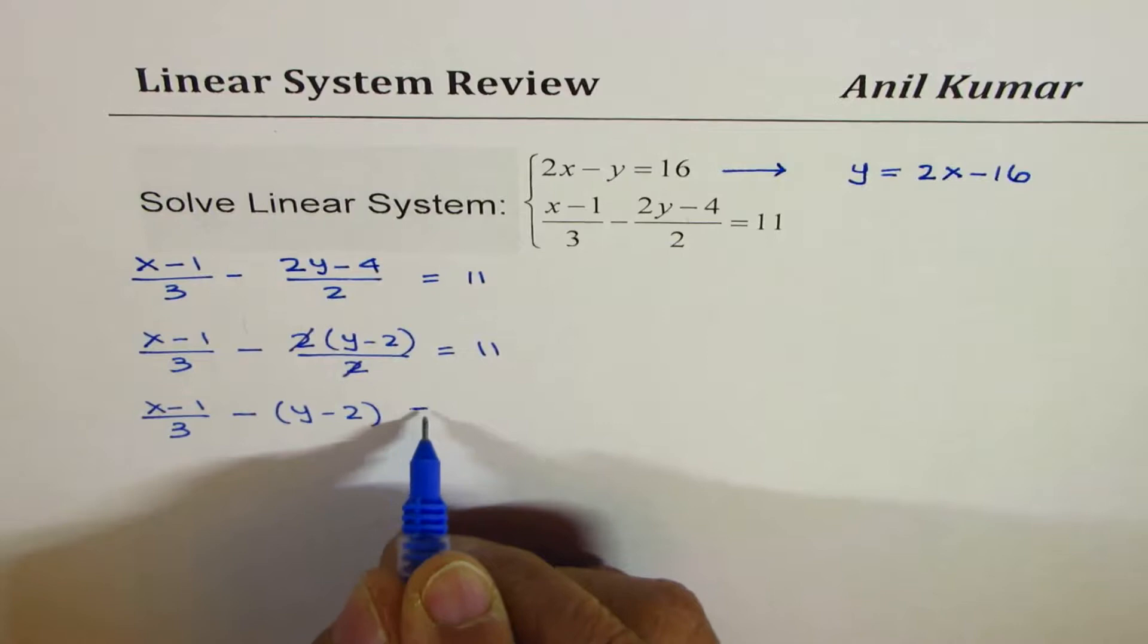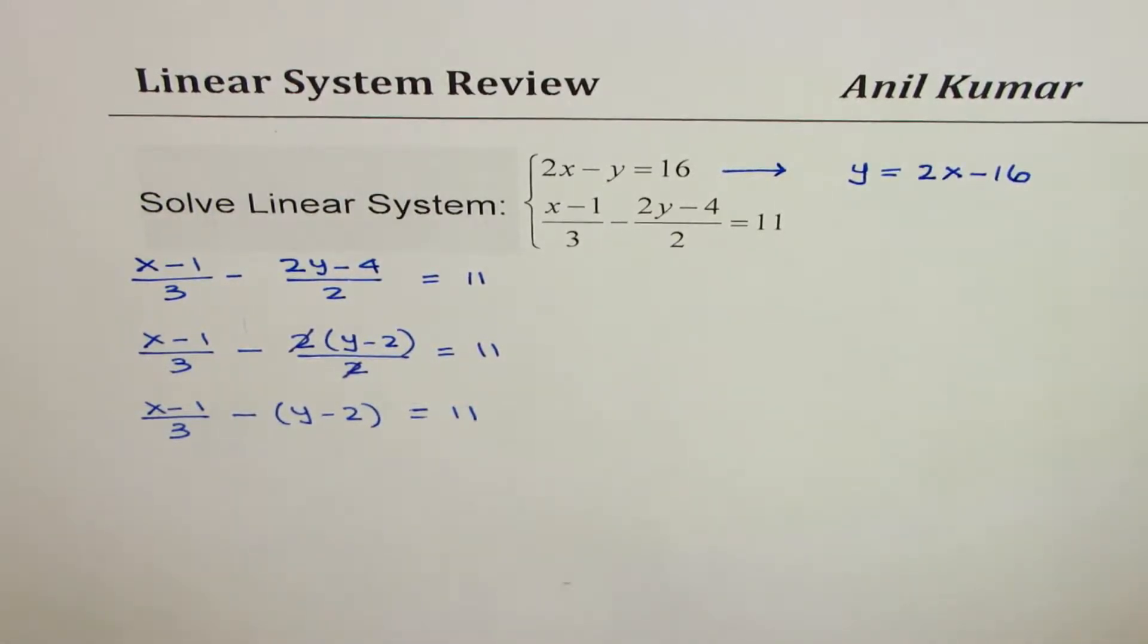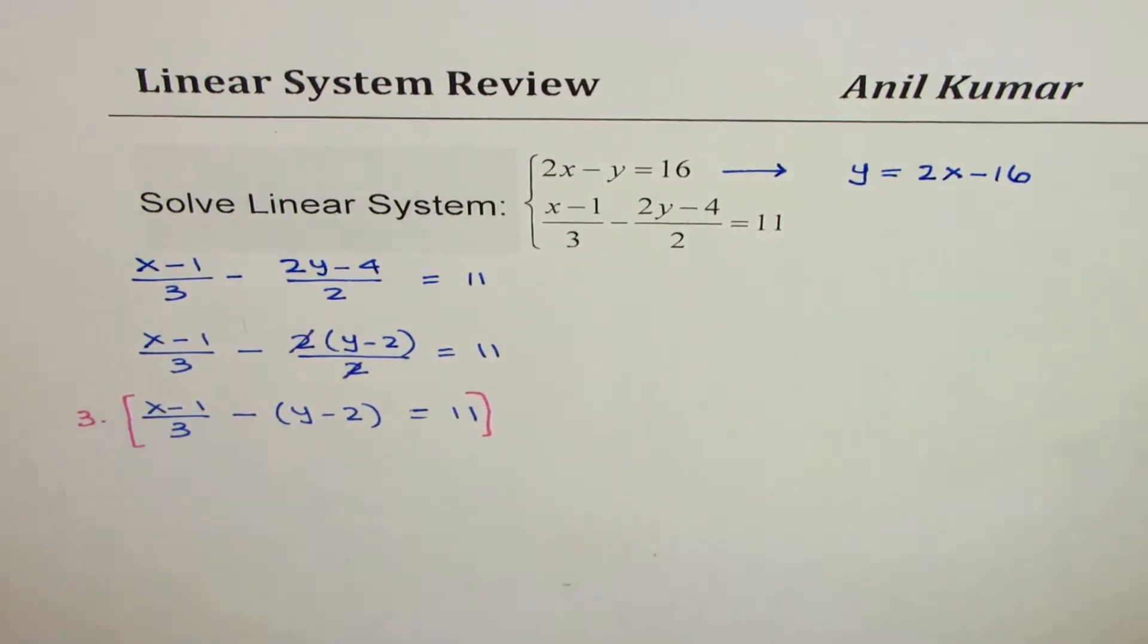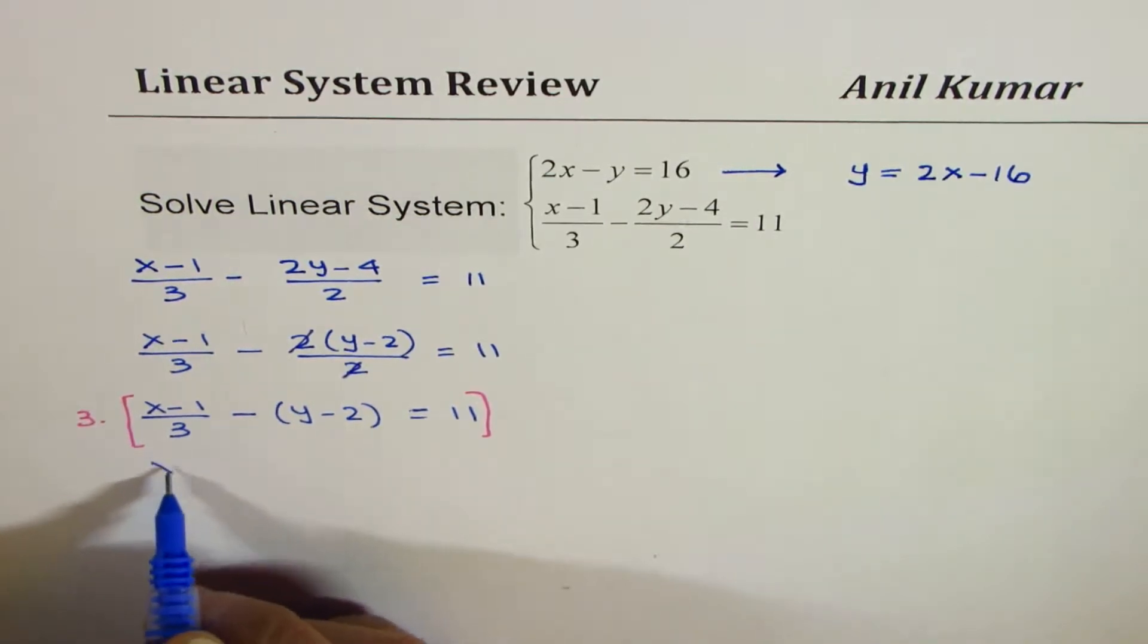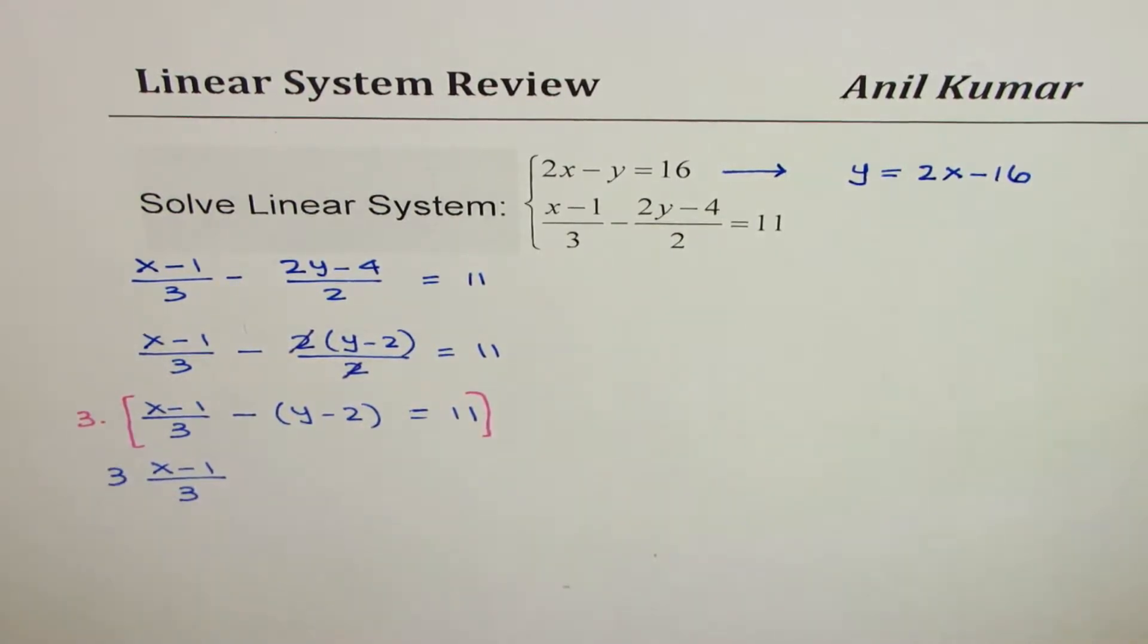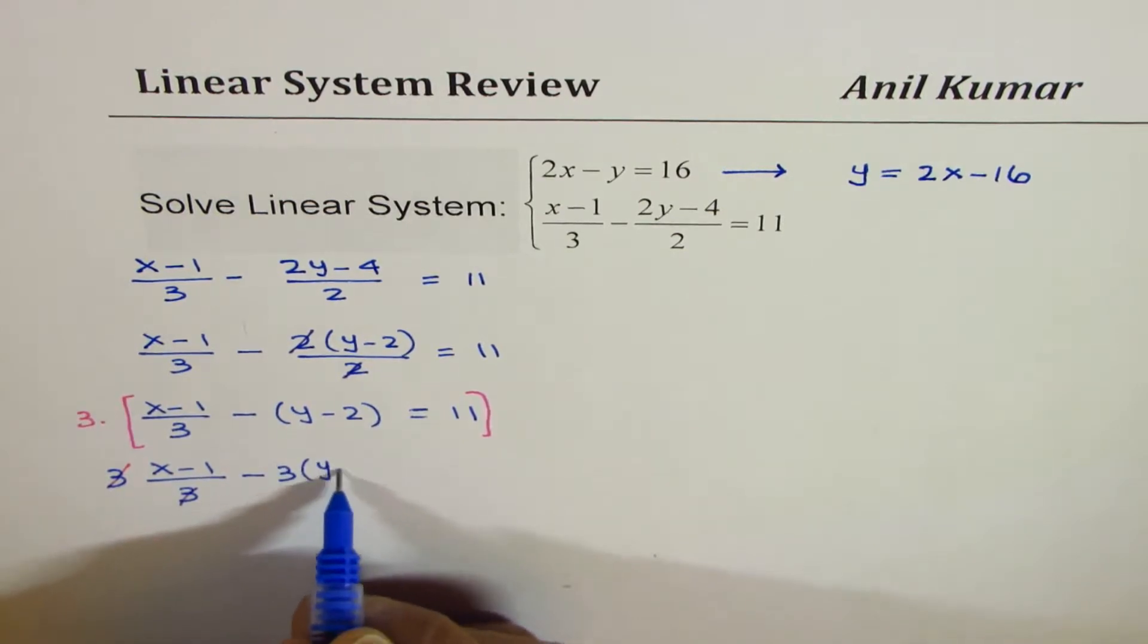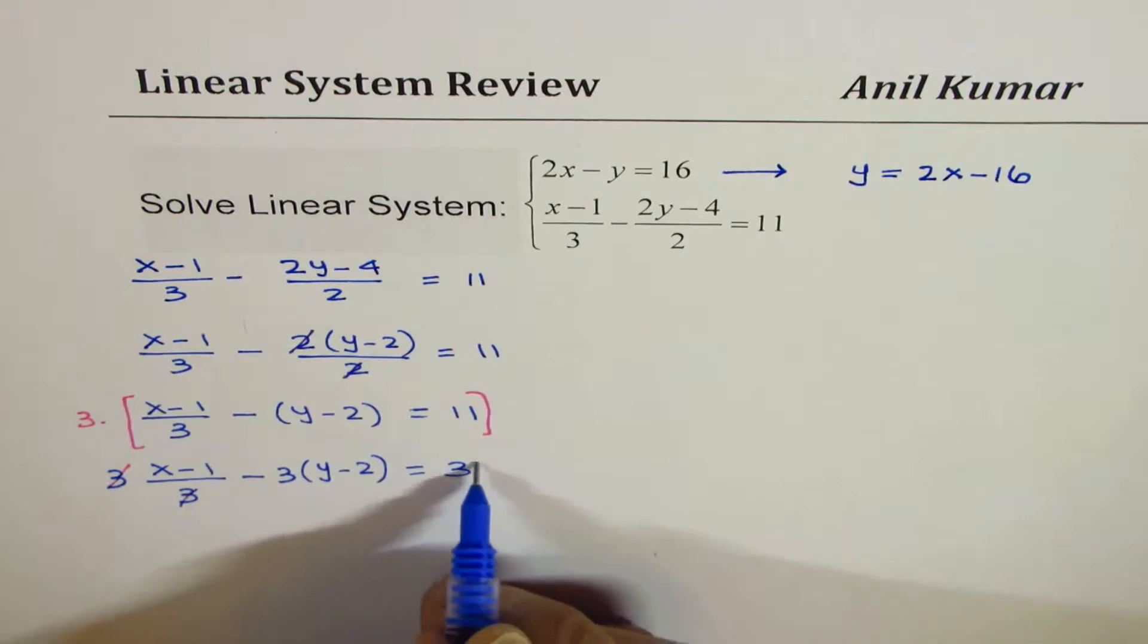Now the best thing to do at this stage is to get rid of fractions. Since 3 is in the denominator, I will prefer to multiply the whole equation, both left and right side, by 3. So if I do that, in the first term, 3 and 3 cancels out. So we get x minus 1. That is the whole idea, no fractions. Minus 3 times y minus 2 equals 3 times 11, which is 33.